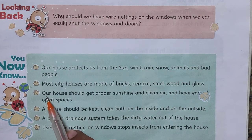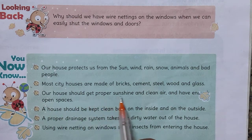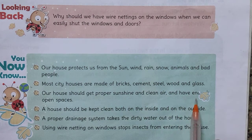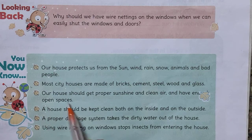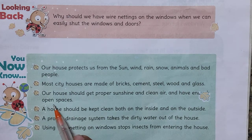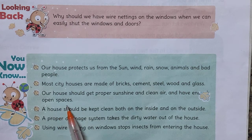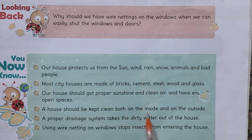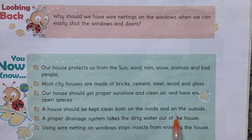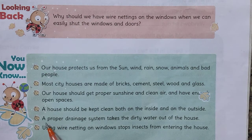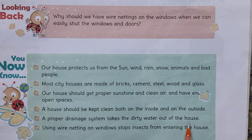Our house should get proper sunlight and clean air and have enough open spaces. As seen in the lesson, verandas help, and proper sunlight and air should pass through doors and windows. A house should be kept clean both inside and outside to drive away diseases.